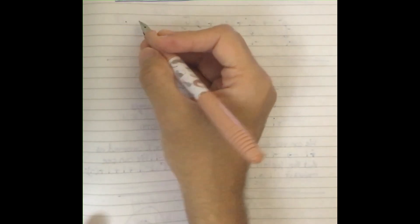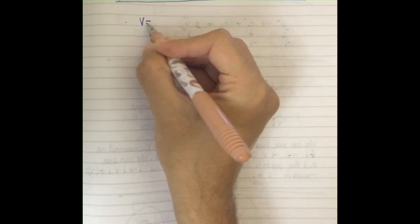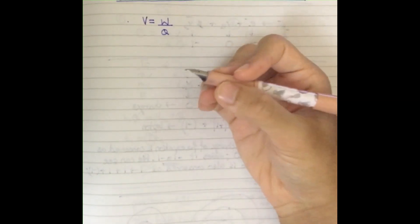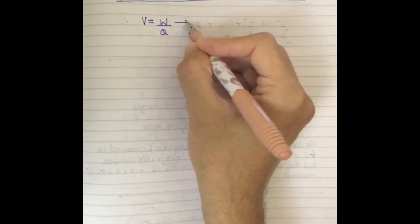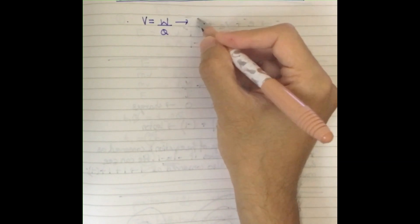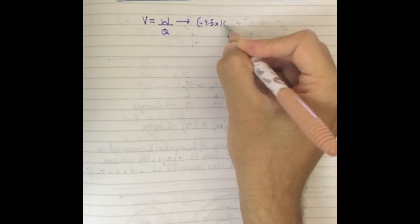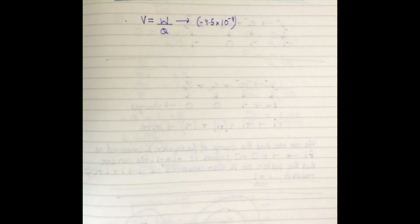The formula we are going to use to calculate work done is V = W/Q. We can rearrange this to get the work done on the charge, which is the work done on negative 4.5 times 10 to the power of minus 9. Nano is basically 10 to the minus 9.